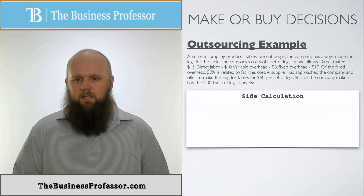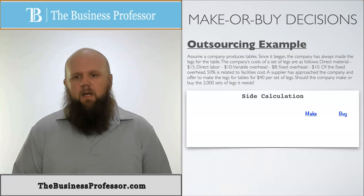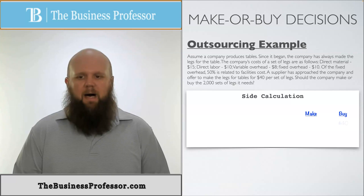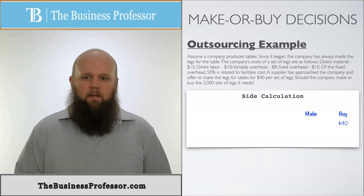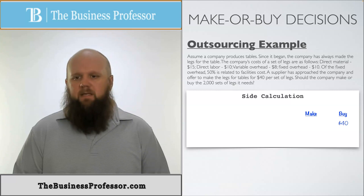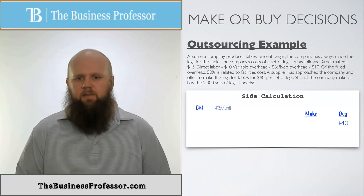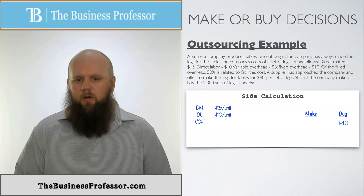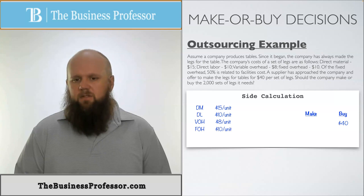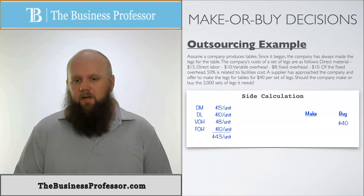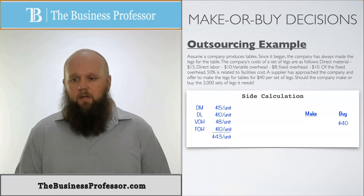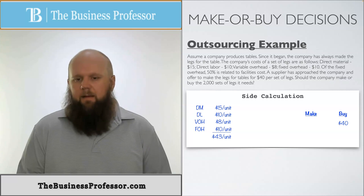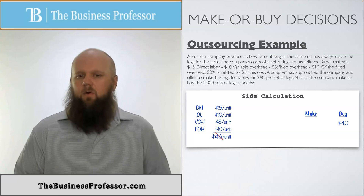We have the decision to either make or buy. The buy option is straightforward — the supplier is offering $40 per set. On the make side, we add up direct material $15, direct labor $10, variable overhead $8, and fixed overhead $10, giving $43 at first glance — wait, that totals $53 per unit. If it costs $53 to make and they're offering $40, it looks like buying is the better option. However, that's not the whole story.